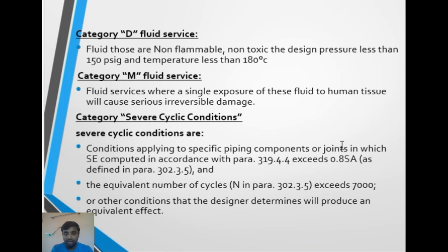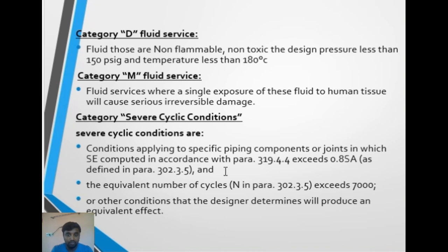Severe cyclic condition applies to specific piping components or joints where the computed displacement stress range SE, calculated in accordance with para 319.4.4, and the equivalent number of cycles exceeds 7,000. This is the severe cyclic condition, or any other condition that the designer determines will produce an equivalent effect.